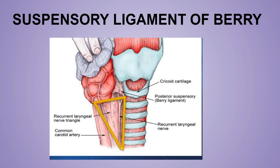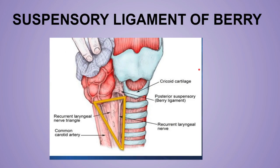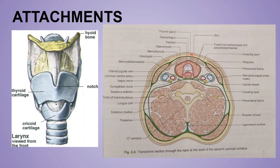An important function of the pre-tracheal fascia is that it provides a slippery surface for the free movement of the trachea during swallowing. As you can see in this diagram, the pre-tracheal fascia covers the trachea and the esophagus. Because of its slippery nature, it allows free movement of the trachea during swallowing. Two main important features: the ligament of Berry and the slippery surface for easy movement of the trachea during swallowing.